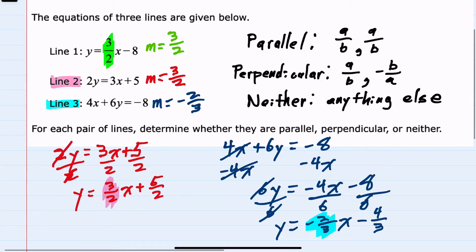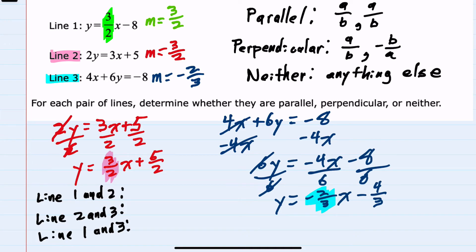Now that we have these slopes, we can tell that when we compare lines one and two, the slopes are the same. So these are parallel. When we compare two and three, they are negative reciprocals of each other. So the fractions are flipped and the signs are different. These are perpendicular. And then lines one and three are also negative reciprocals. So these are perpendicular as well.